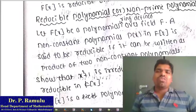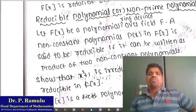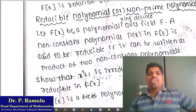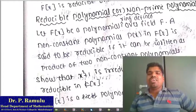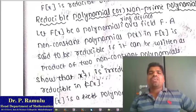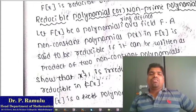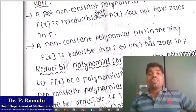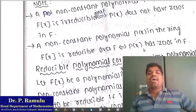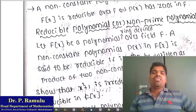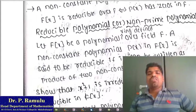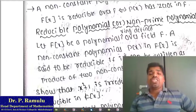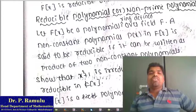Reducible polynomial — or non-prime polynomial: Let F[x] be a polynomial ring over the field F. A non-constant polynomial P(x) in F[x] is said to be reducible if it can be written as a product of two non-constant polynomials. That means P(x) is reducible over F if and only if P(x) has zeros, or it can be written as a product of two non-constant polynomials.